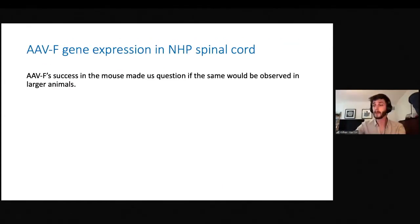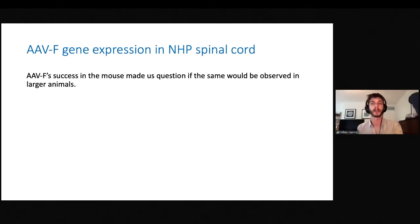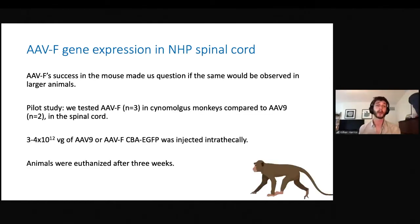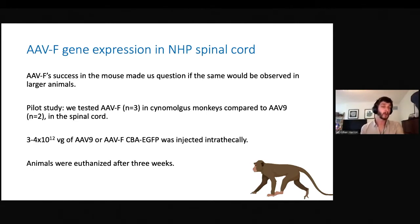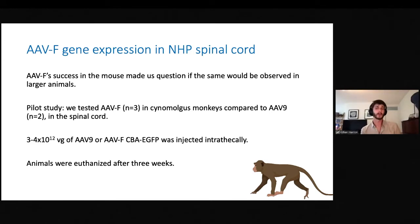The success of AVF made us want to see whether it would translate to larger animals. So we decided to look at cynomolgus macaques. We performed a small pilot study — just three monkeys injected with AVF and two injected with AAV9 intrathecally into the spinal cord at the L4/L5 region. It was a relatively low dose: three to four by 10^12 vector genomes of either capsid, using single-stranded AAV-GFP. After three weeks, we euthanized the animals and took a look.